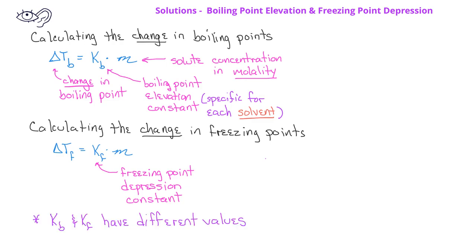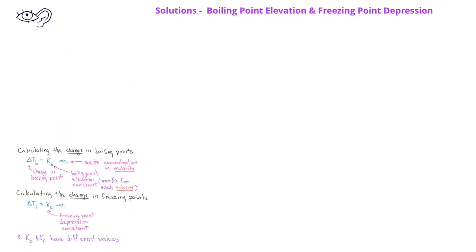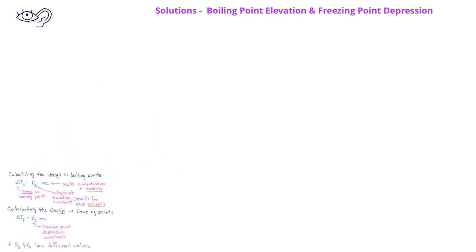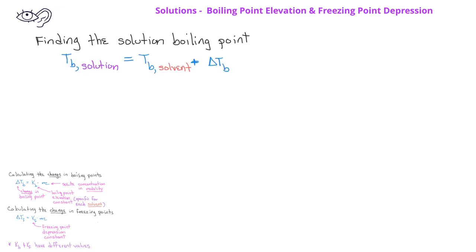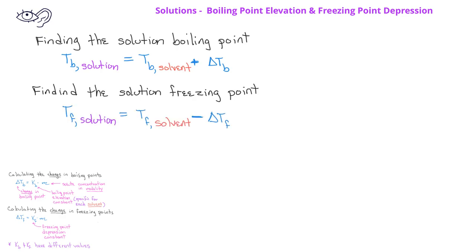Another thing to note is that these equations just give us the change in the boiling point or the change in the freezing point. In order to find the new boiling point for the solution, we would take the boiling point for the pure solvent and add the change in the boiling point. In order to find the freezing point of the solution, we would take the freezing point of the pure solvent and subtract the change in the freezing point.